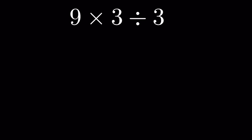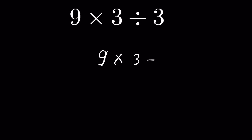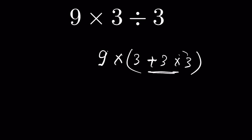Stick to the order of operations. Also remember that the order of operations must be followed within parentheses too. For example, if you have 9 times (3 plus 3 multiplied by 3) inside a bracket, both addition and multiplication are inside the bracket, so you still follow the order of operation — multiplication first, then addition. The left-to-right rule always applies.